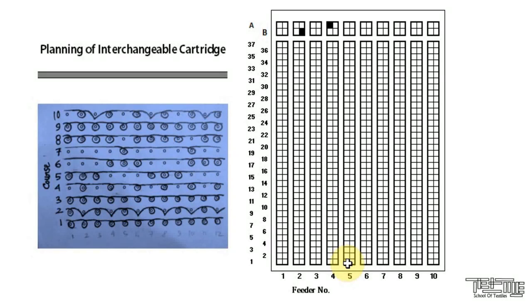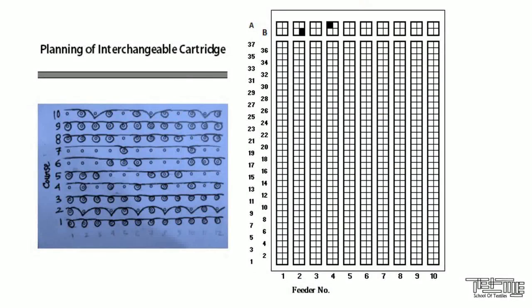For the fifth course, we can't use slot A and B. So we have to fill them from below. For the first loop, slot 1. For the second loop, slot 2. For the third loop, slot 3 and so on.